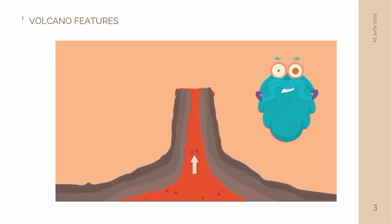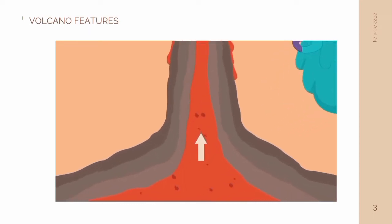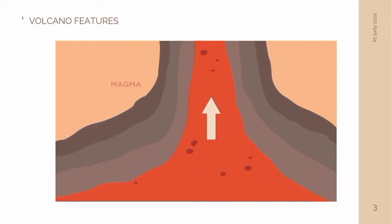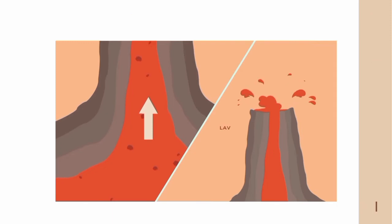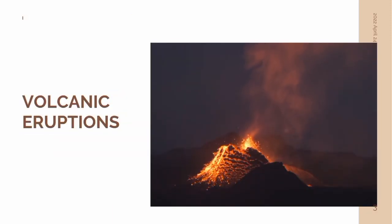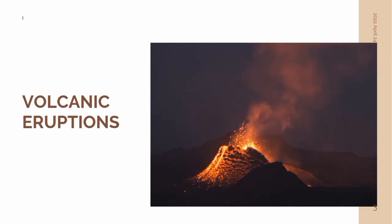But how do volcanoes erupt? Originating many tens of miles beneath the ground, magma is lighter than surrounding solid rock and is driven towards Earth's surface by buoyancy. It is lighter than the surrounding rock, and by pressure from gases within it, magma forces its way upward and may ultimately break through weak areas in the Earth's crust, and an eruption begins.